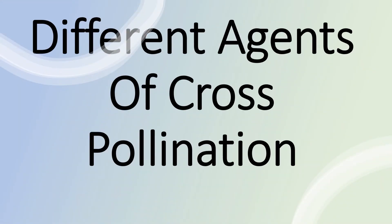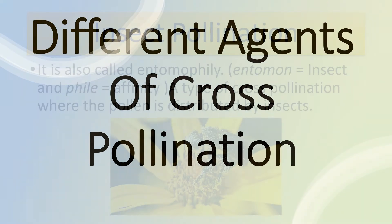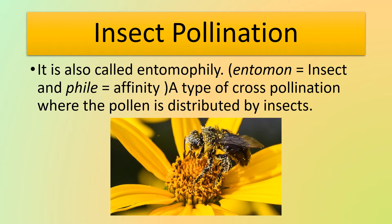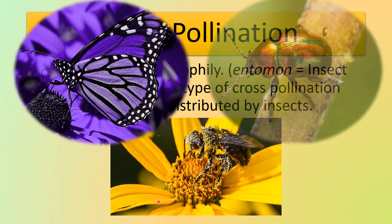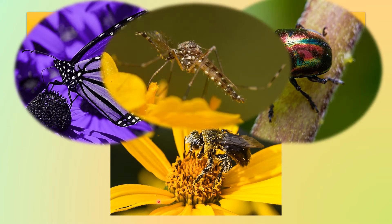Now let's look at the different agents of cross-pollination. First, let's look at insect pollination, also called entomophily, where 'entomon' means insect and 'phily' means affinity. This is a type of cross-pollination where the pollen is distributed by insects. Some insects that pollinate are bees, as you can see here, butterflies, beetles, mosquitoes, and more.